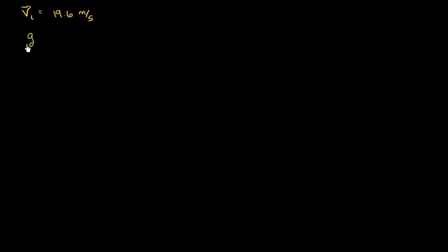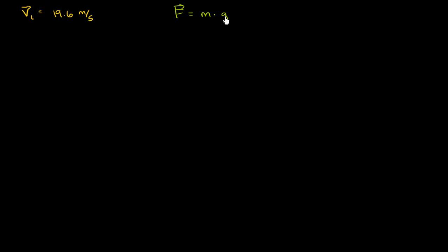The force of gravity on an object near the surface of the Earth is going to be the mass of the object times little g — gravity on Earth — which is 9.8 meters per second squared.